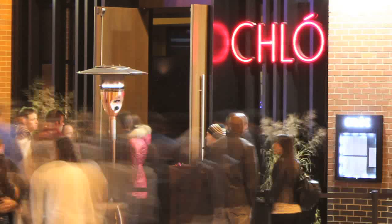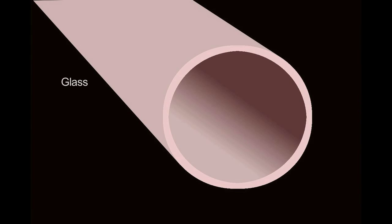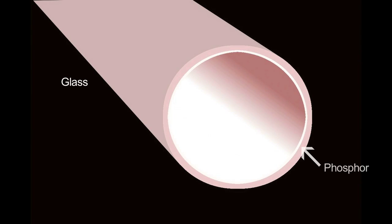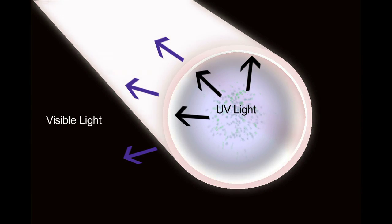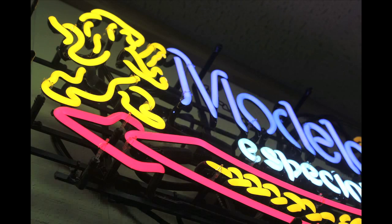Also, a lot of neon signs today use tubing with a phosphor coating on the inside, just like a fluorescent, pumped with argon and mercury. The argon and mercury produces ultraviolet light that excites the phosphor, and the phosphor glows its characteristic color.